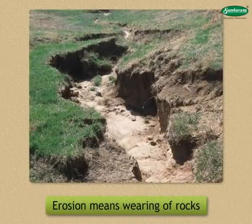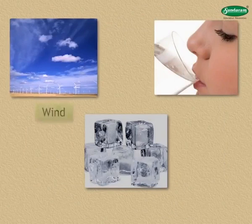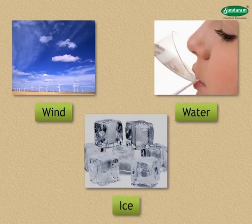Erosion means wearing of rocks. This wearing takes place due to friction and scraping. The movement of wind, water and ice causes friction with the rocks. This leads to the erosion of rocks.